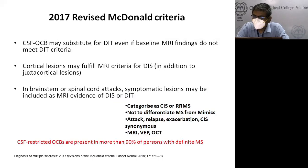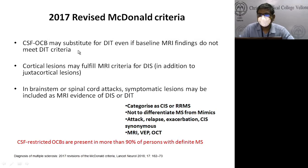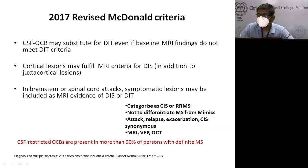For diagnosis of MS, we had the Poser criteria, then the McDonald 2010 criteria; the latest is the 2017 revised McDonald criteria. It is important to categorize whether a patient has definite MS or not, and whether the first episode represents a clinically isolated syndrome or the first episode of relapsing-remitting MS. It is also important not to confuse MS with mimics like sarcoidosis — though concomitant autoimmunity can coexist with MS in around 25% of cases.